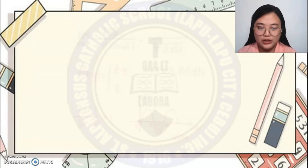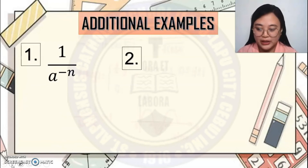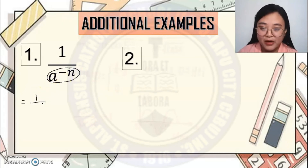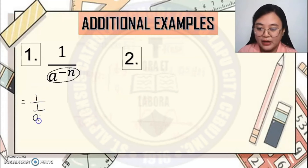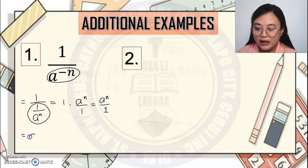Additional examples. Number 1: 1 over a raised to negative n. We know that a base with a negative exponent can be written as 1 over a raised to n. Simplifying further by taking the reciprocal of the denominator gives a raised to n over 1. The final answer is a raised to n.